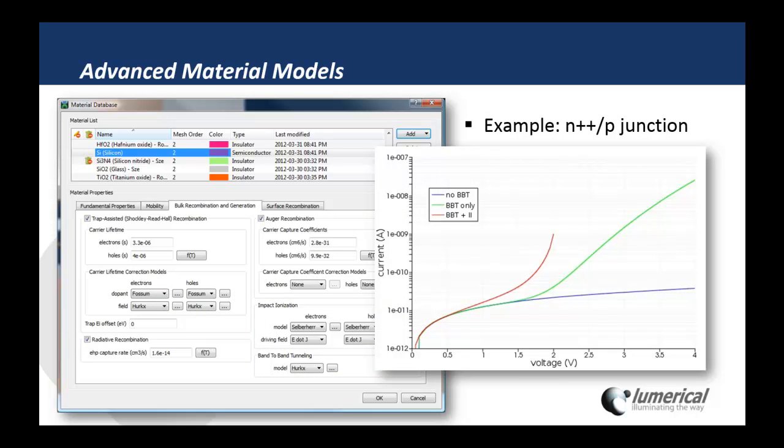As an example, here we have the IV characteristic for an N++P junction. The blue curve represents the current response in the absence of any tunneling effects. When we enable band-to-band tunneling, we can see the soft Zener breakdown. And when we enable impact ionization, we see the sharp avalanche breakdown in the red curve at approximately 2 volts.